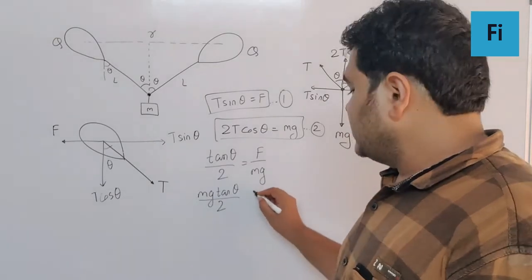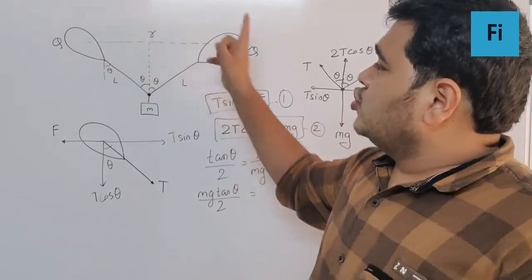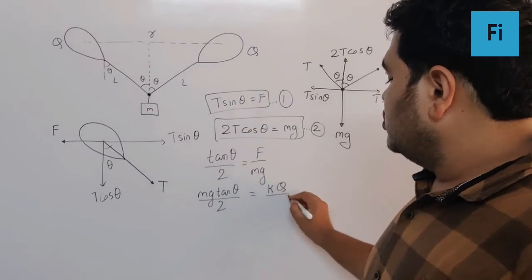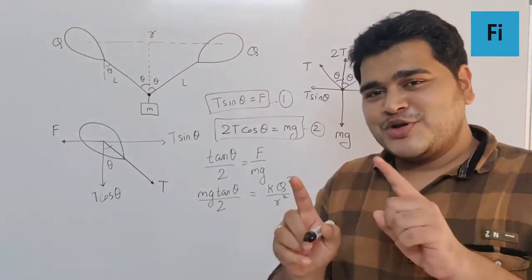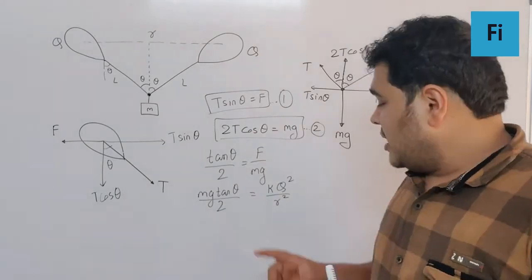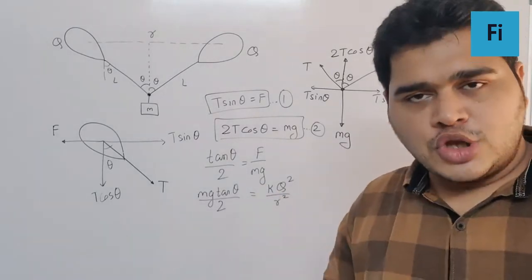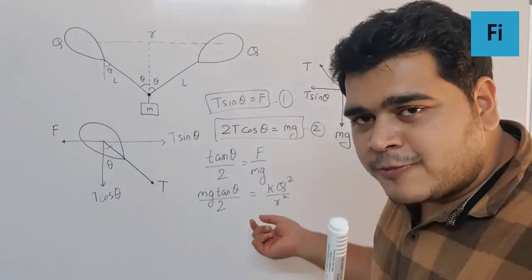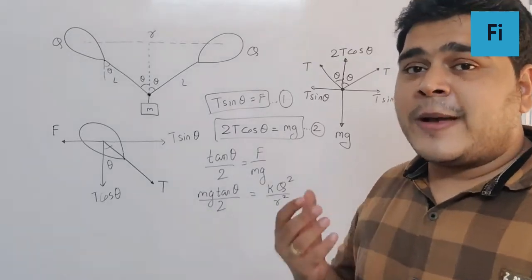This is the electrostatic force between the two balloons having charge q separated by distance r, which should be k q square by r square. K is the electrostatic constant, which has value 1 upon 4 pi epsilon 0, but here I am writing this as k because if you check the options all have k in it and nowhere will you find the mention of epsilon 0.